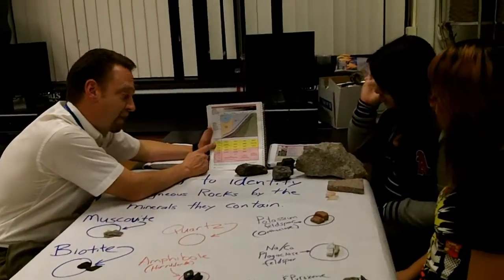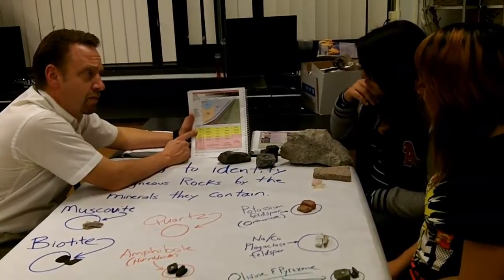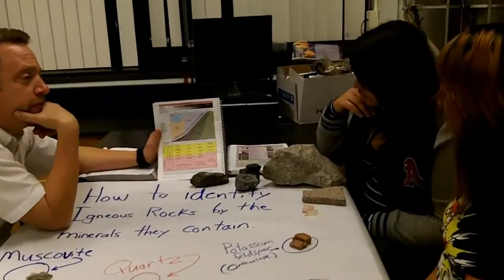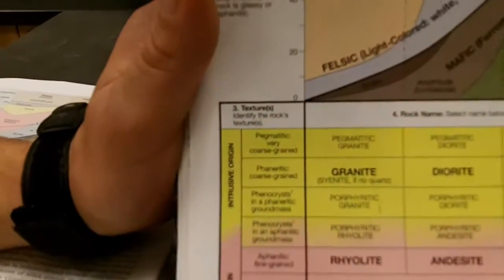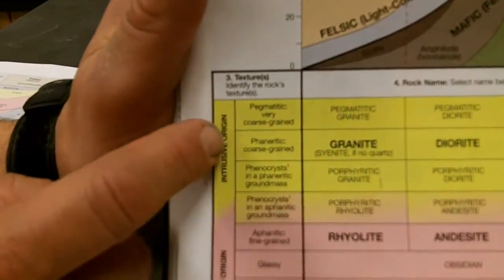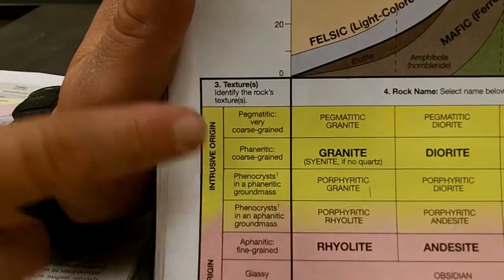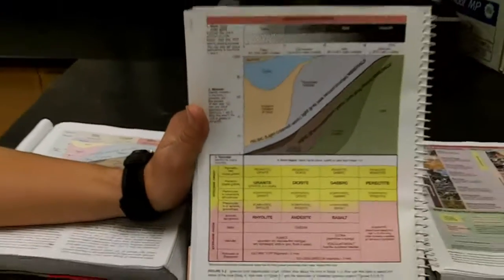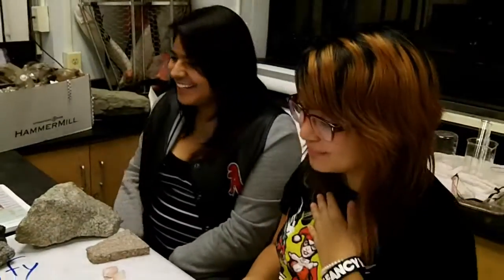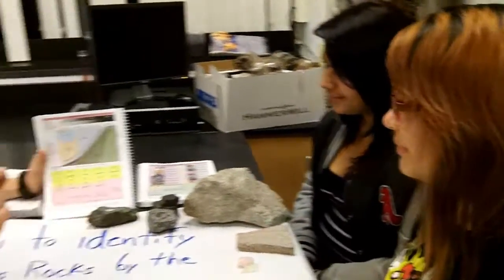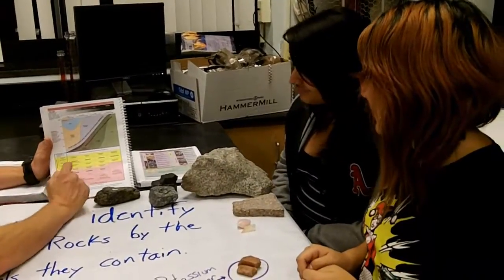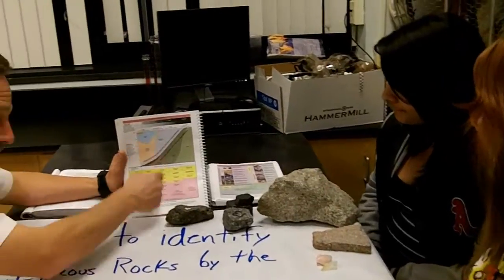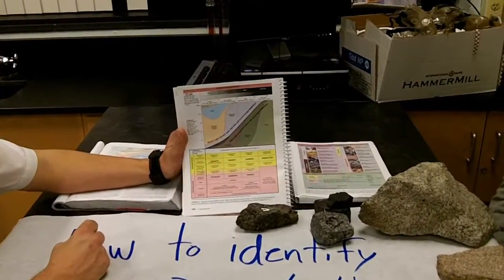Then you look at other characteristics — like is it phaneritic? What did that mean — big or small crystals? Big. If you like a band like One Direction, you're a big fan — phaneritic means big crystals. And then aphanitic — think of ants, they're really small. So aphanitic is little crystals. Once you find out if it's phaneritic or aphanitic and you know where it crosses on the chart, you can identify them real easy that way.